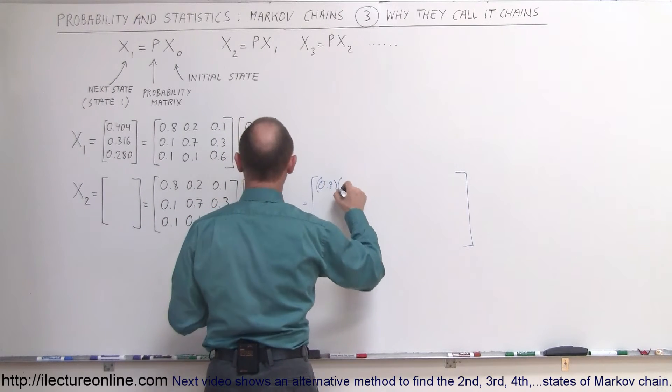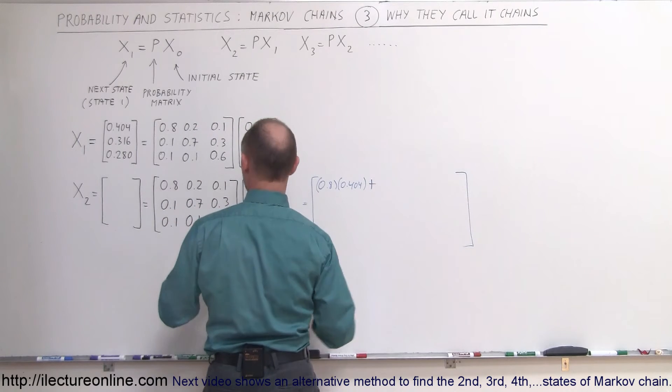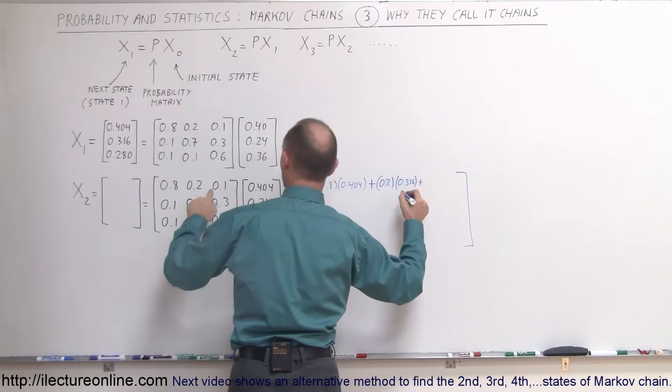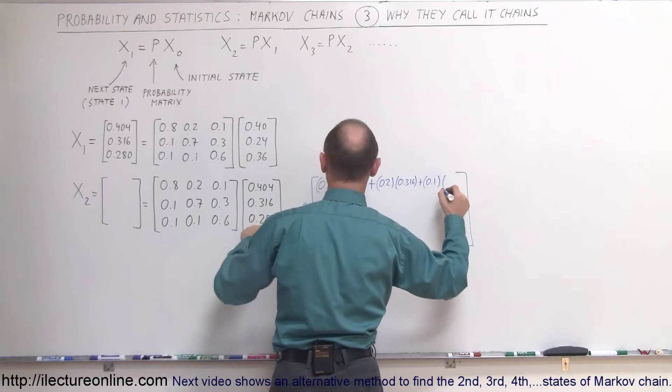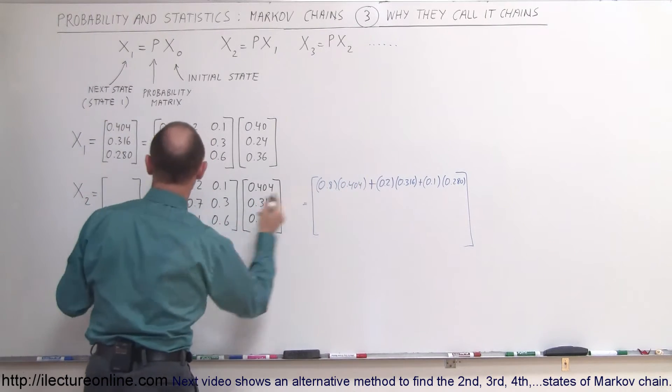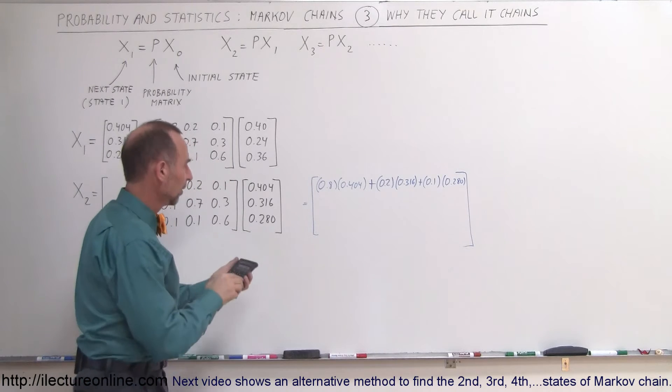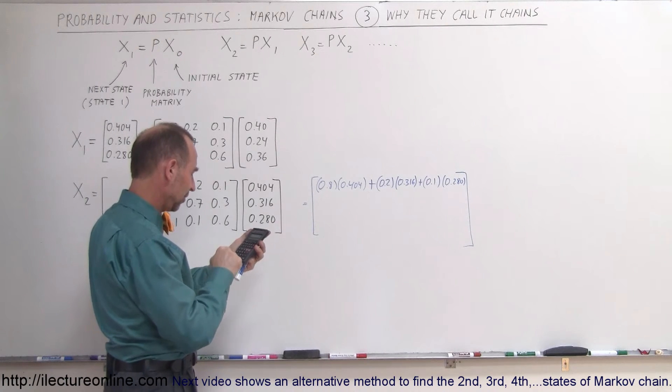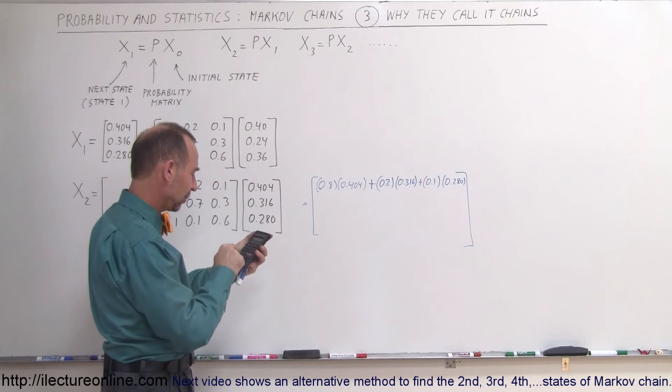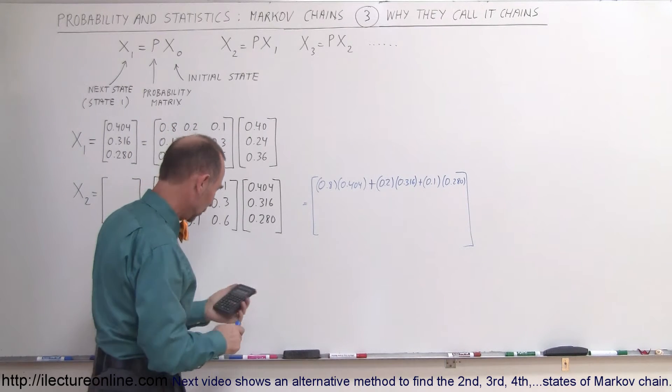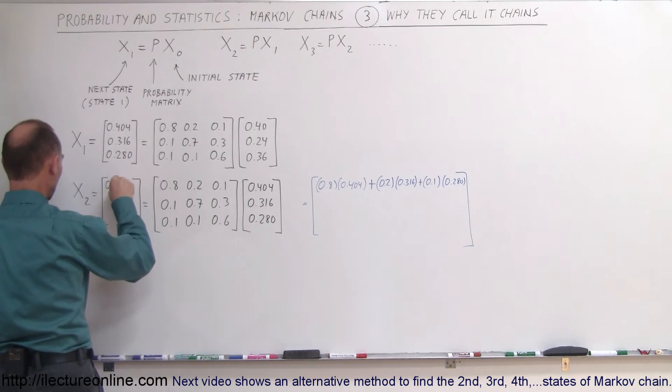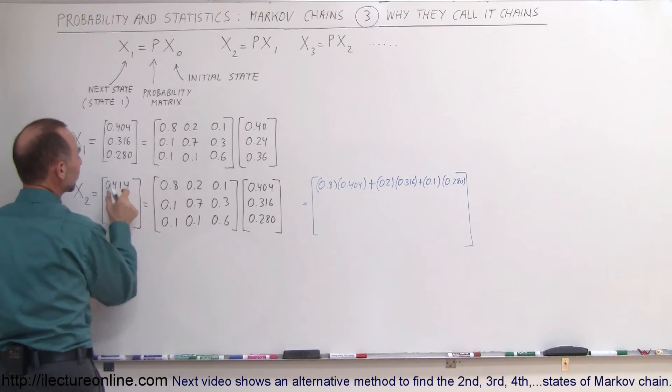So it's 0.8 times 0.404 plus 0.2 times 0.316 plus 0.1 times 0.28. So it's these two plus these two plus these two gives me the value for the first cell. Let's calculate: 0.8 times 0.404 plus 0.2 times 0.316 plus 0.1 times 0.28 equals 0.4144. So this becomes 0.414 and I'm only going to keep three decimal places.